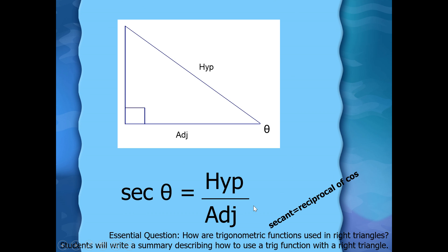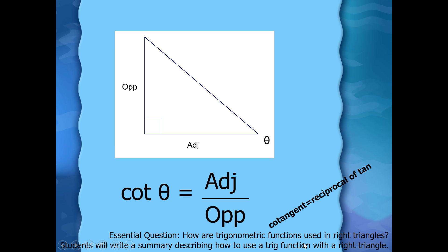The next one: the reciprocal of cosine — not 'cost,' but cosine — is secant. We abbreviate it SEC, and secant of theta is hypotenuse over adjacent. The next one is cotangent. Cotangent equals the adjacent over the opposite. It's not 'cot' — it's cotangent. That's how we abbreviate it, and it is the reciprocal of tangent.